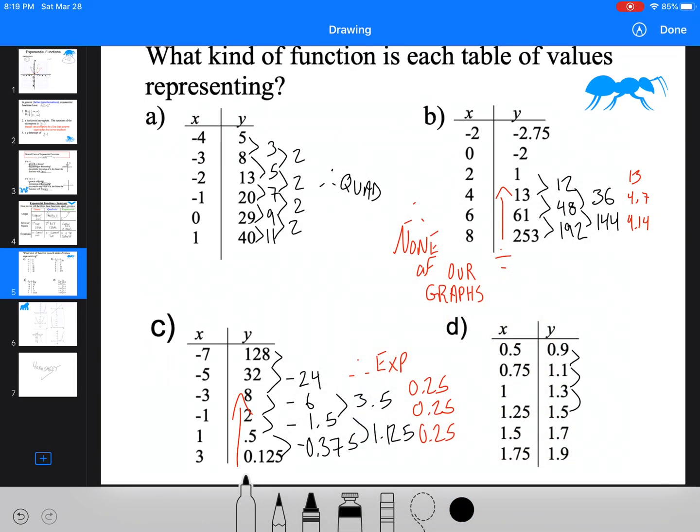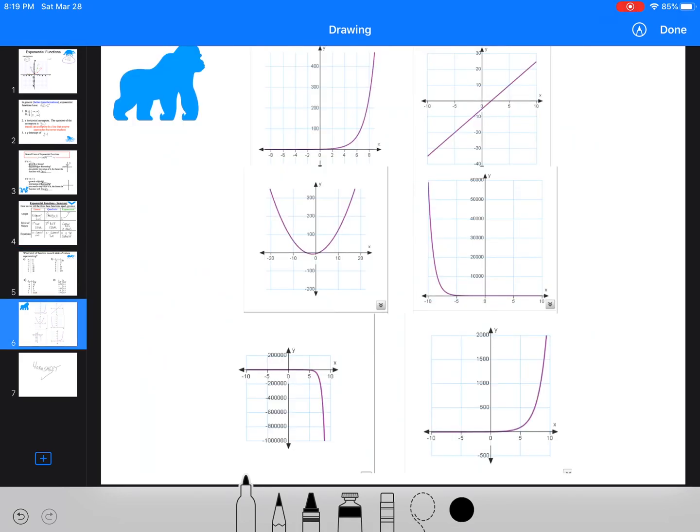Last one. I mean, this should be obvious what it's going to be. But we'll go through it. So 0.2, 0.2, 0.2, 0.2, 0.2. Therefore, this is linear.